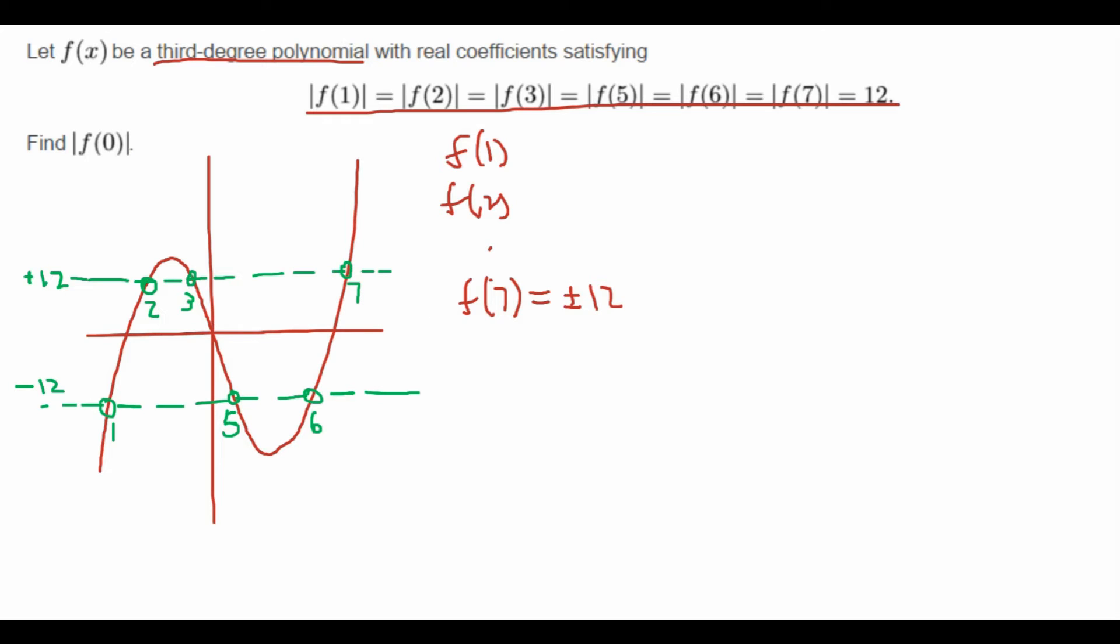So now can we construct our polynomial? If we first look at the top line, we have that f(2) = f(3) = f(7) = 12. And we know it's a third degree polynomial, that is f. So what if we let f(x) - 12 equal another polynomial g(x)?